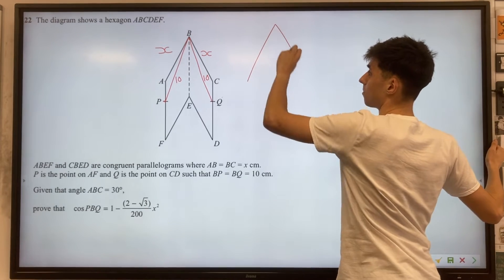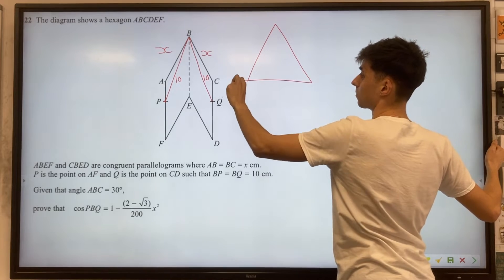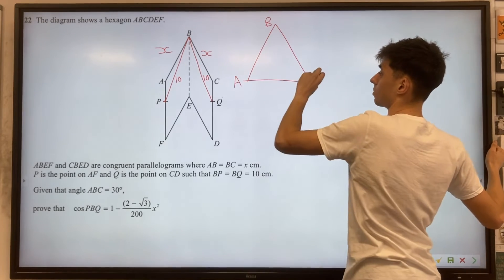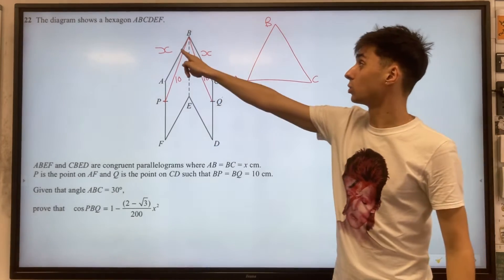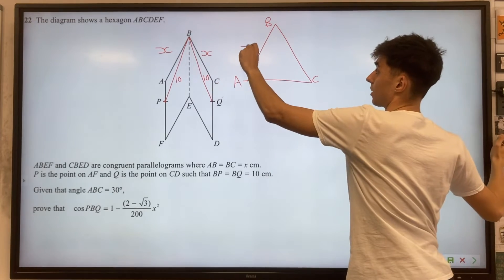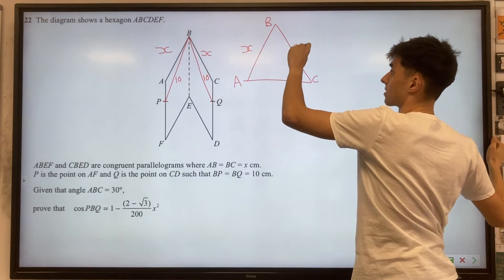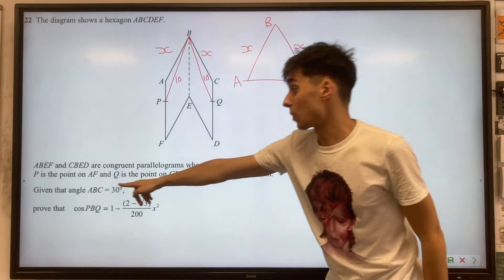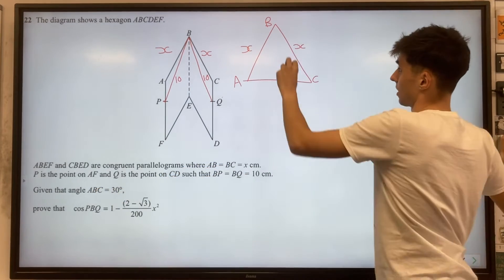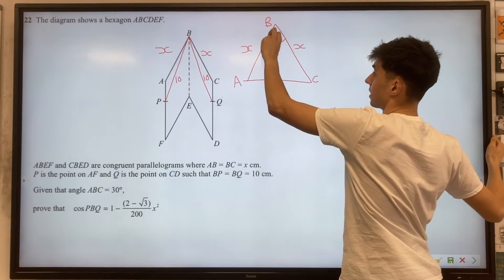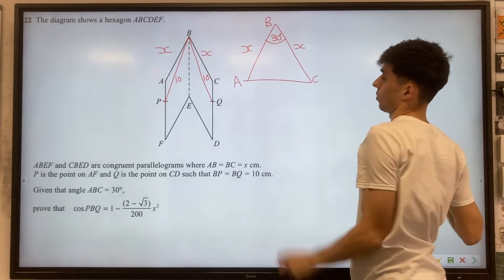So we can split triangle ABC and triangle PBQ and draw those both separately. So here's me doing this. I'm going to take A, B, C, and ABC is the triangle with sides X here and here. So X, X, and where angle ABC is 30. So now we can add a 30 in here, triangle ABC.